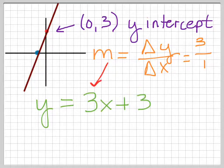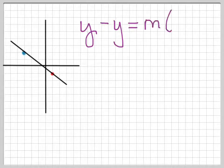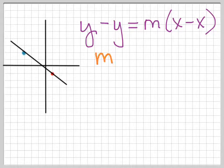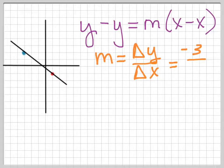In this next graph it's difficult to see where the y-intercept is, so instead I'm going to use point-slope form: y minus y₁ equals M times x minus x₁. I can pick either of the two points. I also need to find the slope: M equals the change in y over the change in x. Moving from the blue point to the red point, we go down three units — negative three — and over four units, giving us a slope of negative three-fourths.